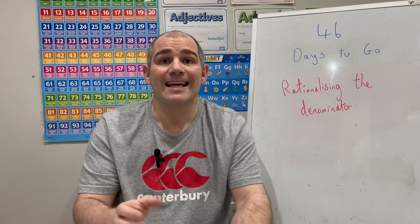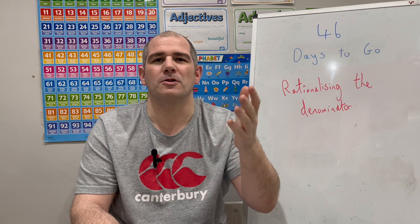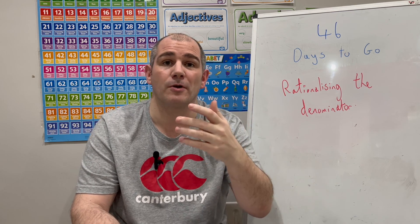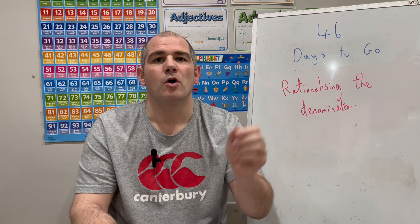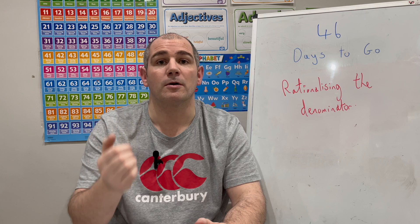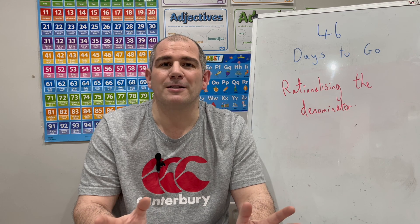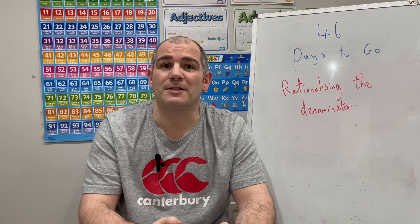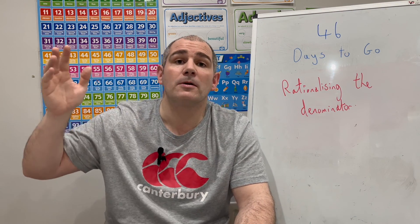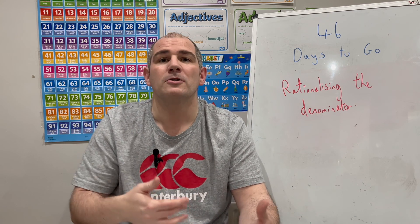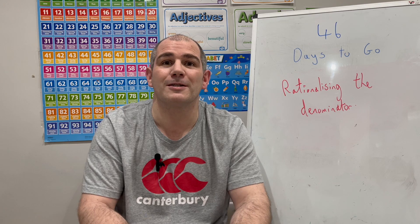In today's lesson we've looked at rationalizing denominators — both when there's a simple surd like root 3 on the bottom, where you multiply numerator and denominator by that surd, and when the denominator contains a binomial such as 1 plus root 2 or root 7 minus 1, where you multiply by the conjugate. There are 46 days to the GCSE Maths exam, so keep up with the daily videos — the Higher Plus Five Days will include questions like these. Thanks very much, cheers, bye.